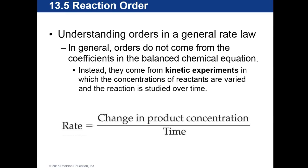We need to understand orders in a general rate law. Orders do not come from the coefficients in a balanced chemical equation — they come from kinetic experiments in which the concentrations of reactants are varied and the reaction is studied over time. This is something we actually do in the clinical chemistry laboratory, and you'll be performing it next quarter in clinical chemistry one.